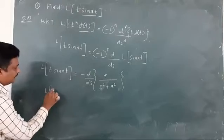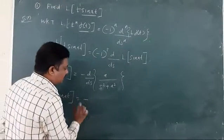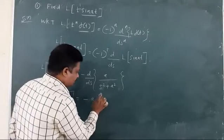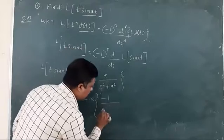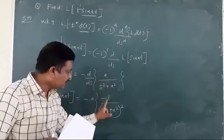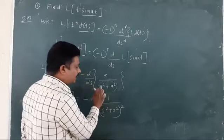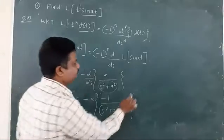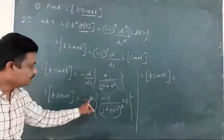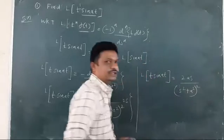So L{t · sin(at)} = -d/ds [a/(s² + a²)]. Since a is constant, we apply the derivative formula: d/ds [1/x] = -1/x². This gives minus times (-1/(s² + a²)²) times 2s. Therefore L{t · sin(at)} = 2as/(s² + a²)². This is the required answer.